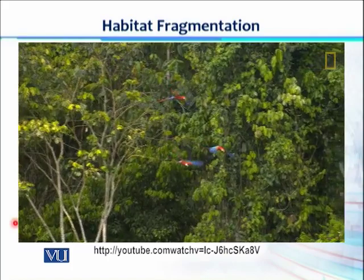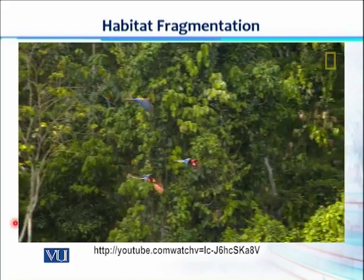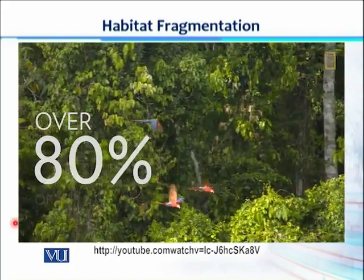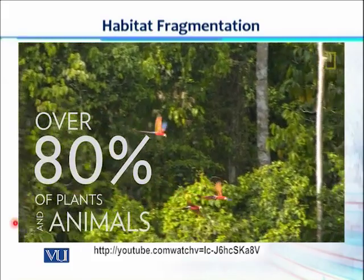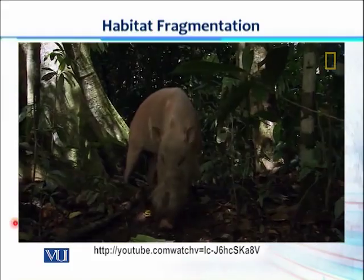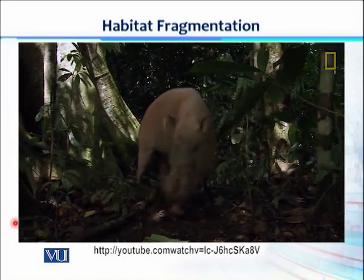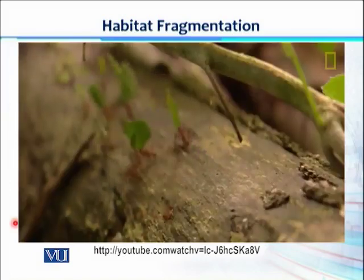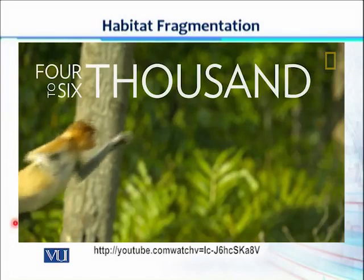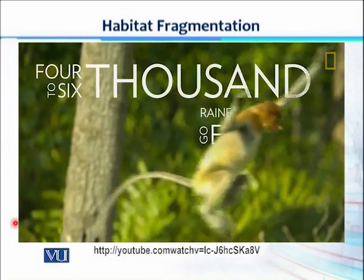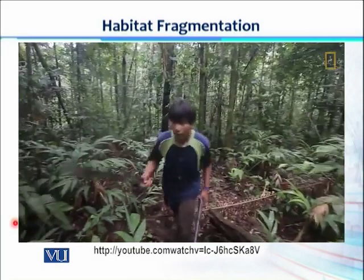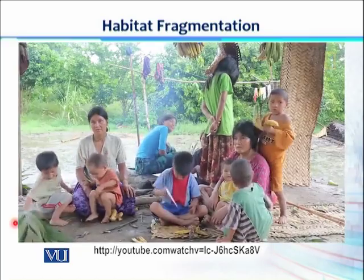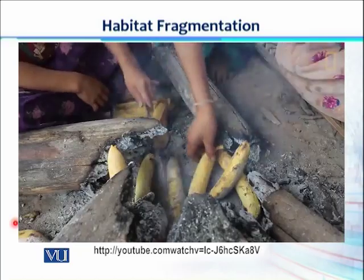In addition to helping regulate the Earth's climate, forests provide habitats for over 80% of the plants and animals that live on land. But deforestation destroys these habitats, diminishing biodiversity. Some estimates suggest that 4,000 to 6,000 rainforest species go extinct each year. This also affects the more than 2 billion people who rely on forests as sources of food and shelter.